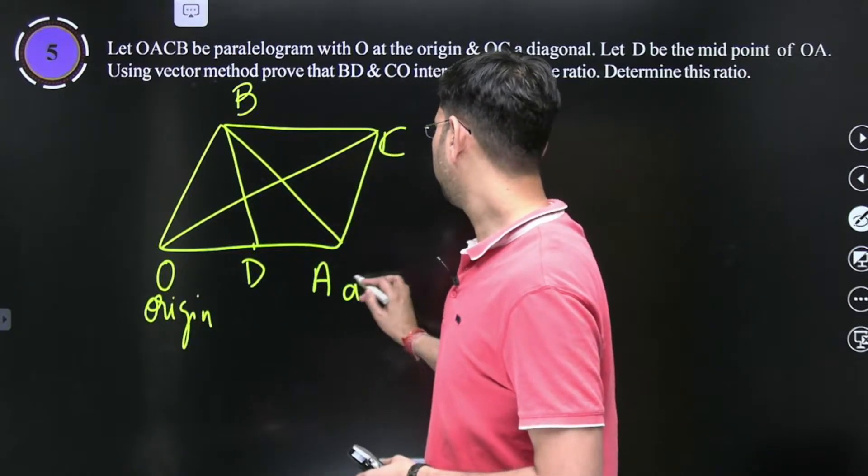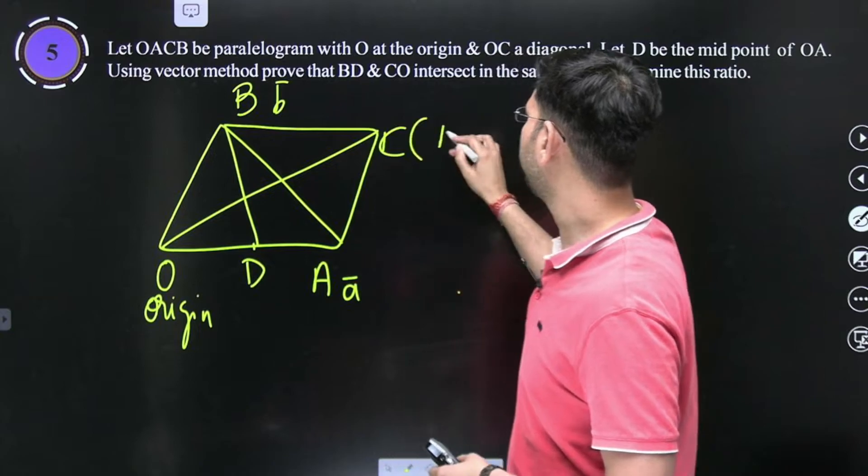This is the origin. This is point A, position vector. Parallelogram law of vectors: C, B plus C.